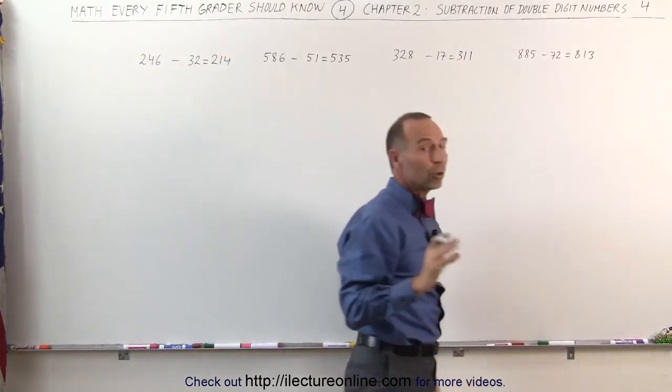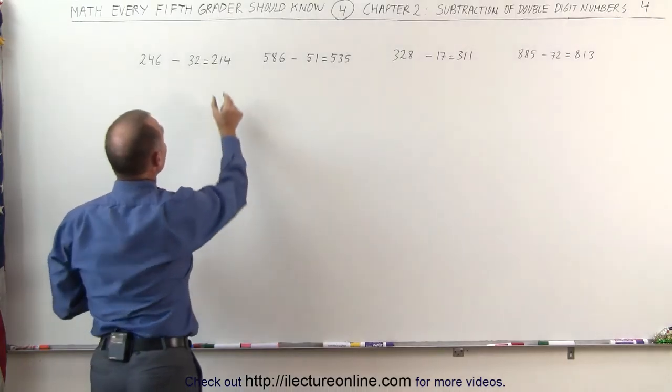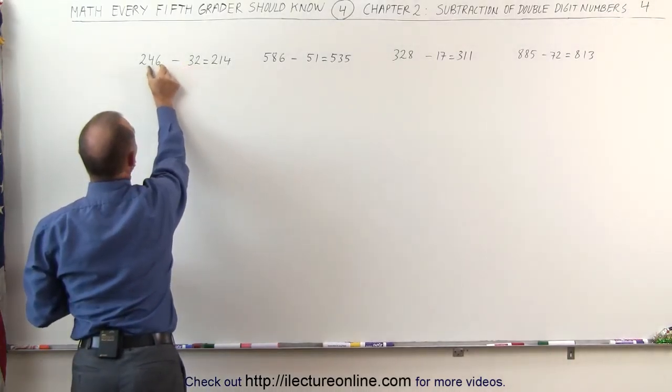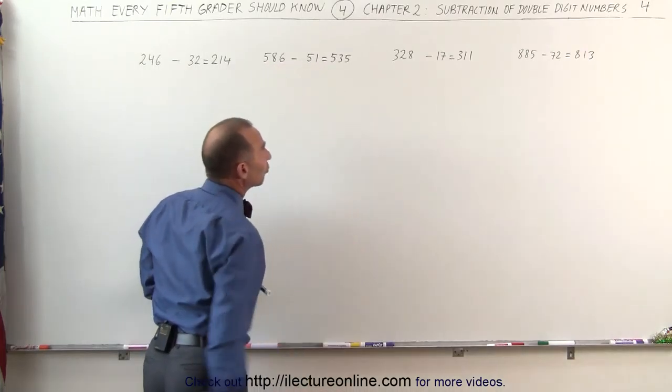And that's how we can very quickly subtract a two-digit number from a three-digit number, provided that these two digits are smaller than those two digits. 32 is smaller than 46, 51 is smaller than 86, and so forth. So that's a fairly simple technique.